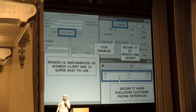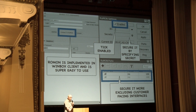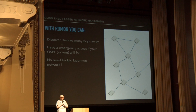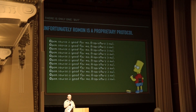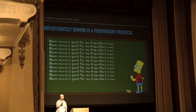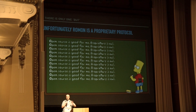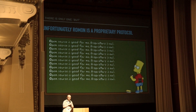ROMON is really useful if you have a routed network. If you are a WISP who started with bridge topology and are planning to convert to proper routing, ROMON can discover devices and be a life saver for easy access to any device on your network. However, it is a proprietary protocol, so we can only use it with MikroTik RouterOS. It would be nice to add other vendor devices, but ROMON is MikroTik-only.